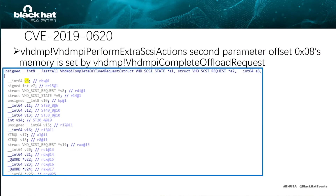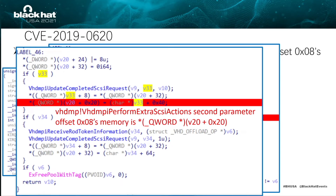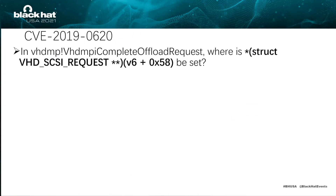By reverse engineering, I find that perform_extra_SCSI_action's second parameter offset's memory is set by complete_offload_request. In function complete_offload_request, the value of V6 offset 0x58 is passed to V33, and then V33 is put as 0x40 into V20 offset 0x20's memory. Actually, the value of V20 offset 0x20 is the value of V3, that is the value of V36 offset 0x50, which also equals the value of V6 offset 0x50.